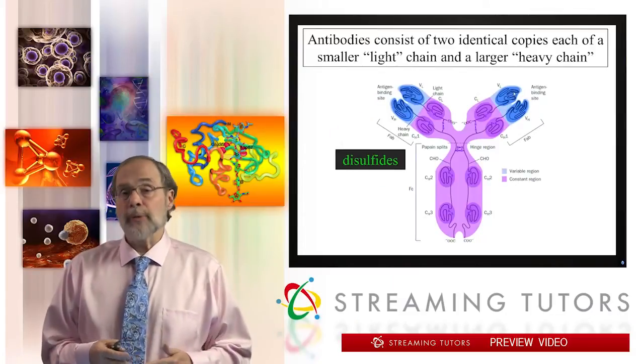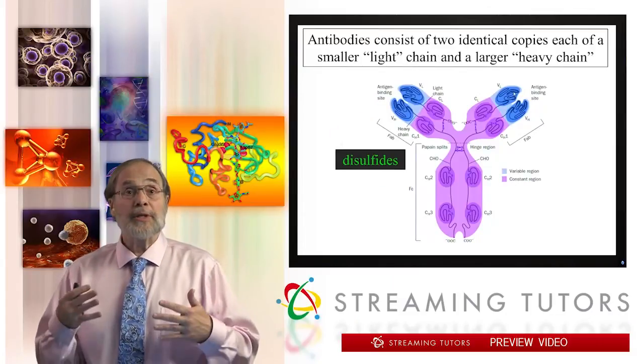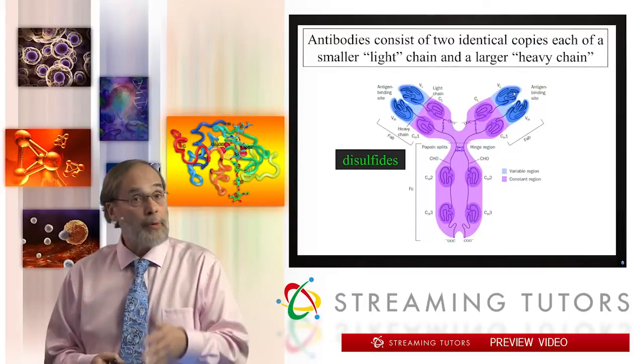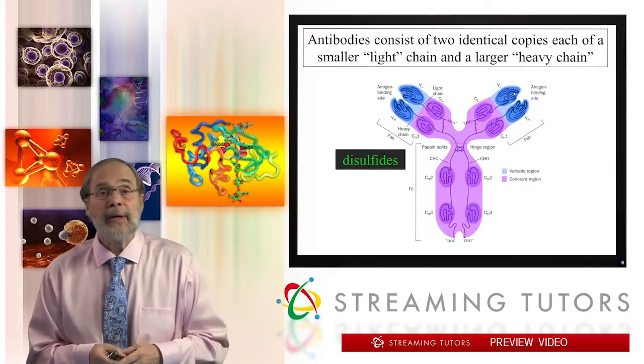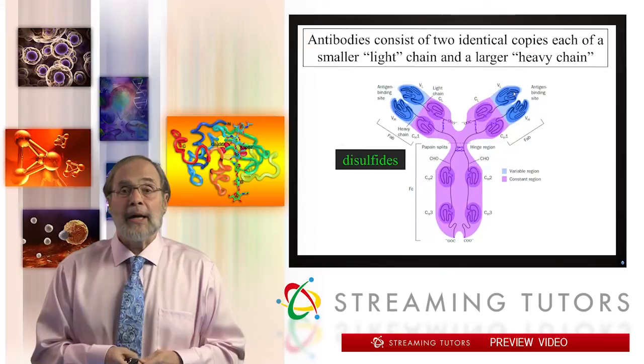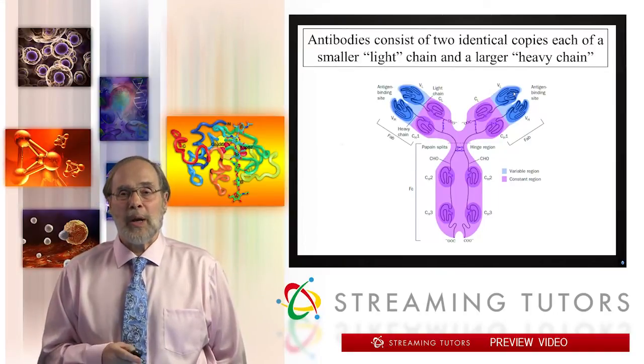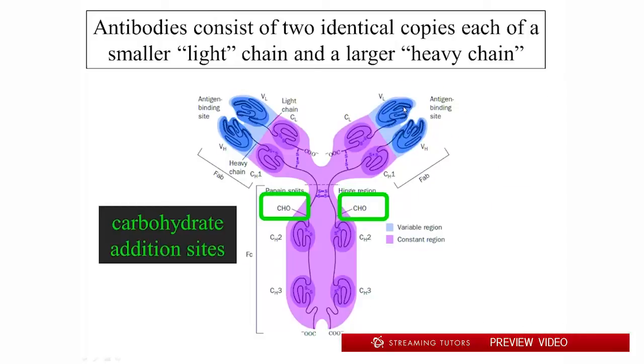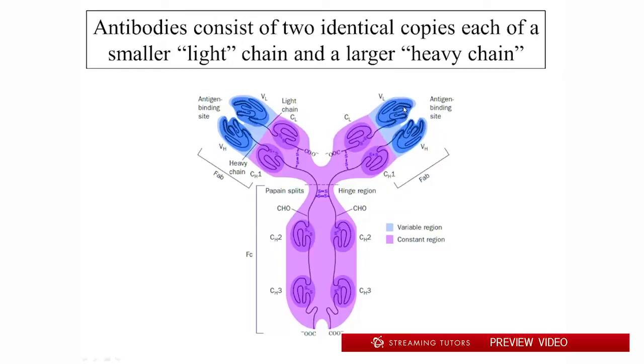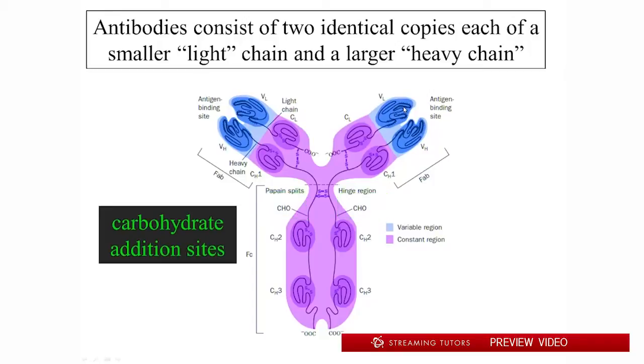And again, as we've alluded to, disulfide bond formation is another characteristic of extracellular proteins like ribonuclease that we talked about earlier, for example. And so again, we're not terribly surprised to see them here in an extracellular secreted molecule, like an antibody. The CHO symbols here is kind of a shorthand for carbohydrate. So this is illustrating where in this version of the structure depiction you should think of the carbohydrates being added post-translationally. You see that there. See the CHO.